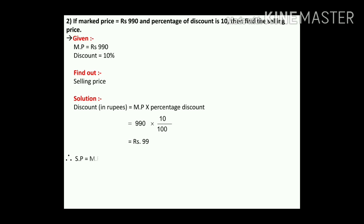Now we find the selling price: SP equals MP minus discount. MP is 990 minus discount 99. We get rupees 891. Therefore the selling price is rupees 891.